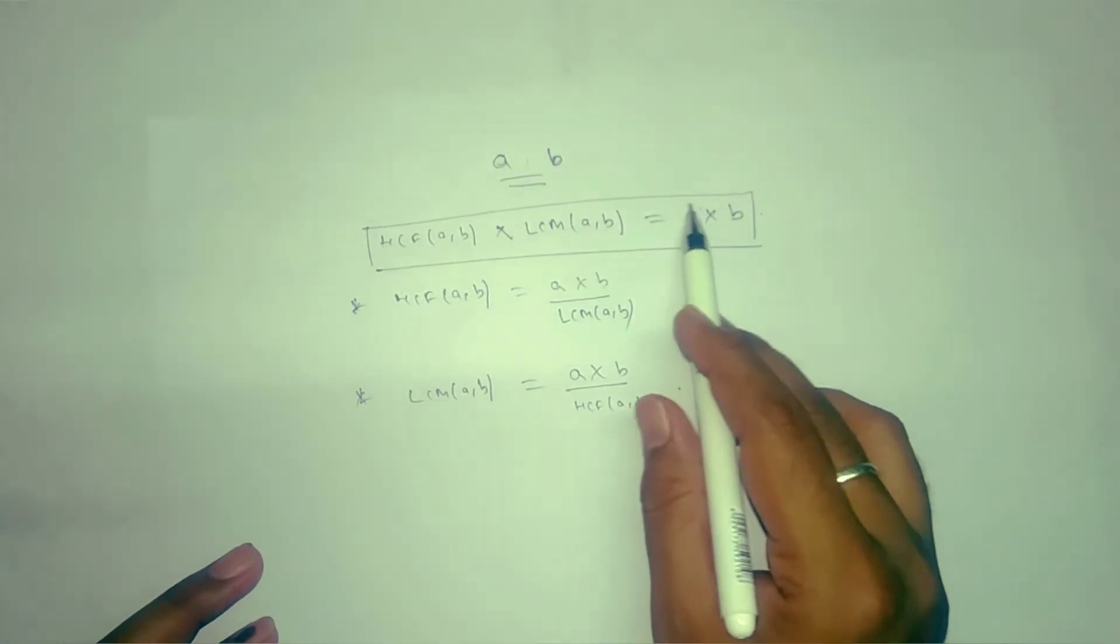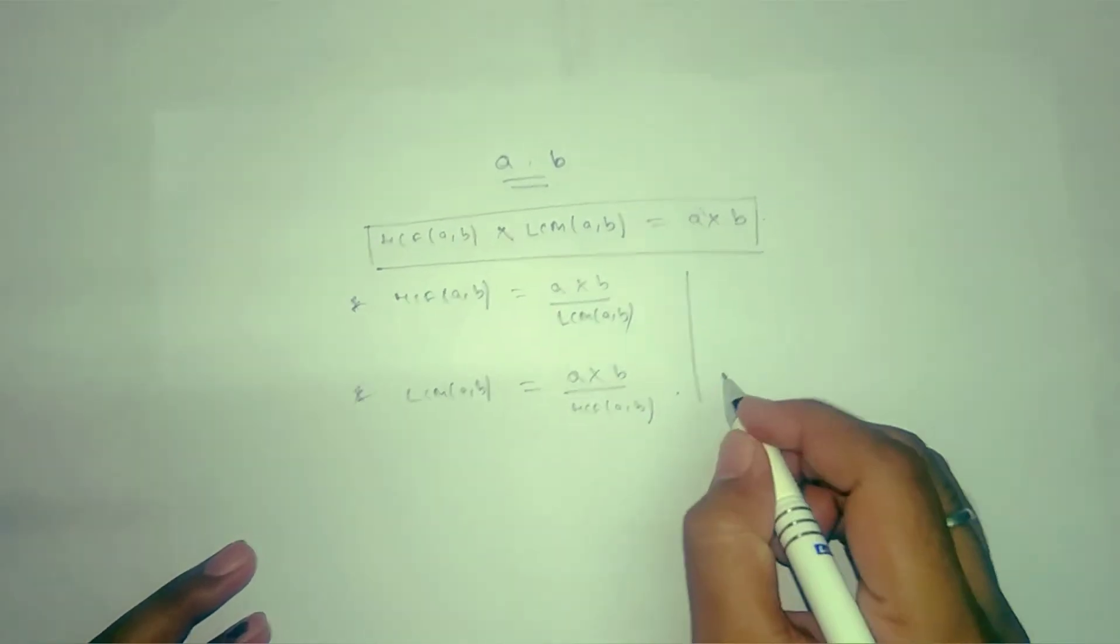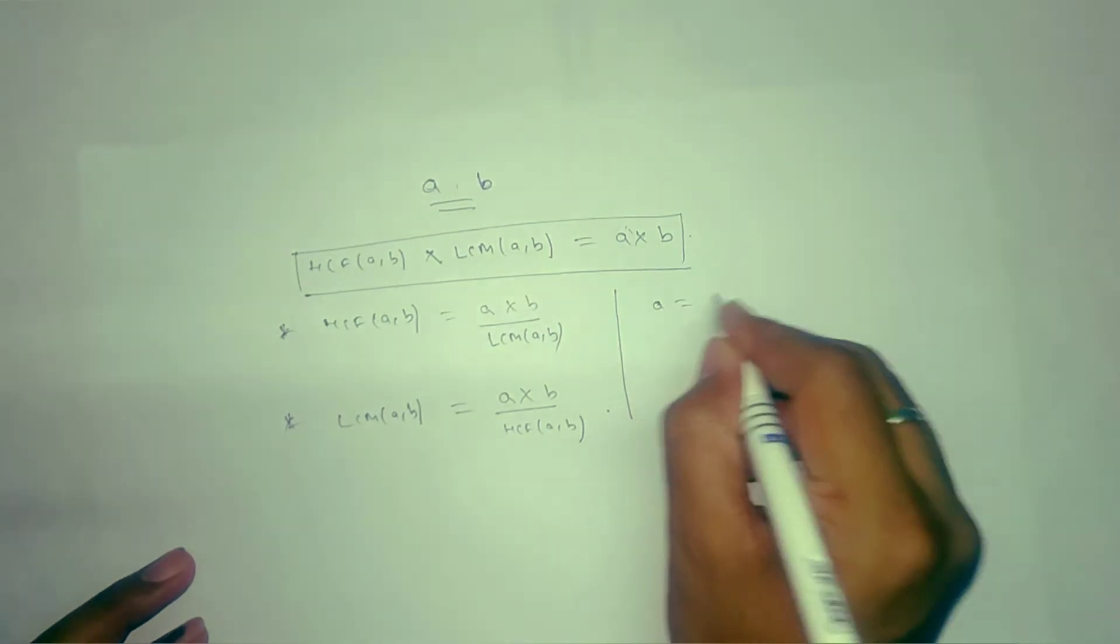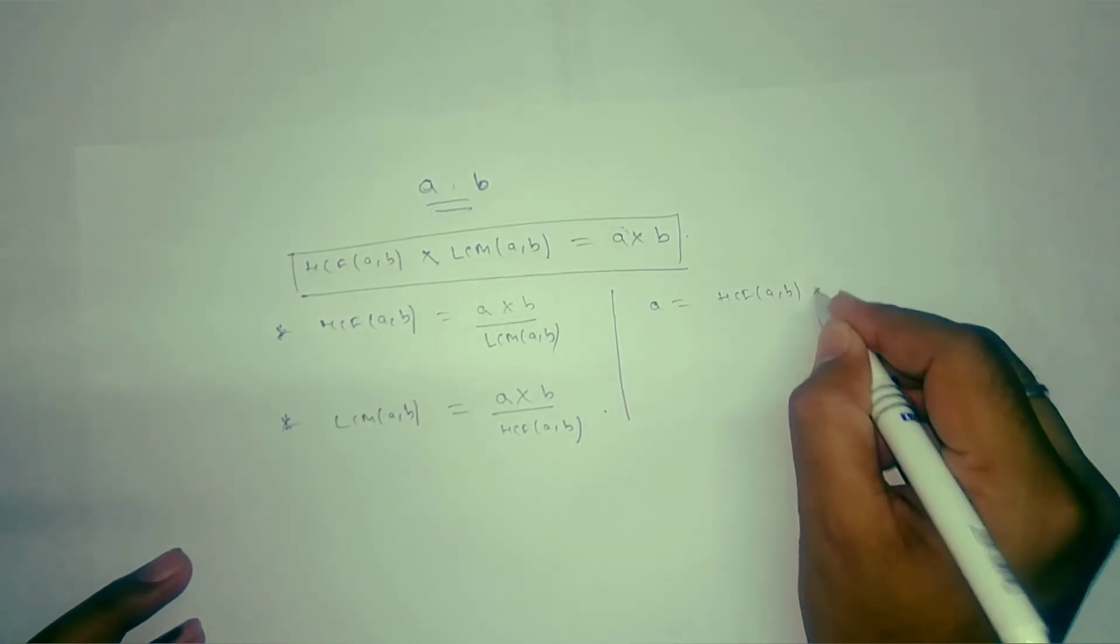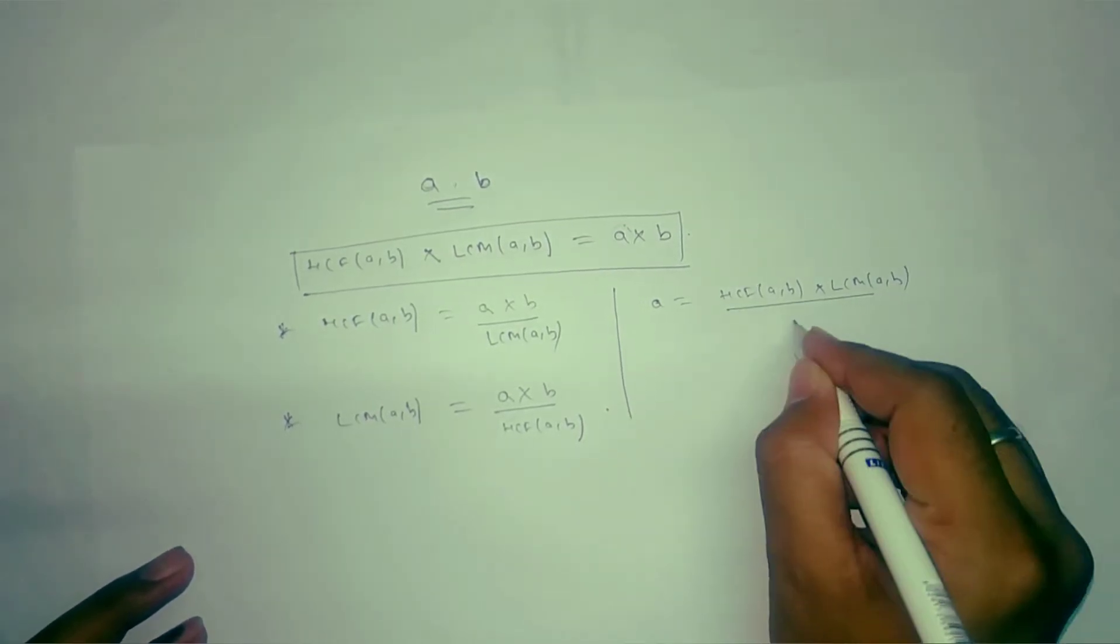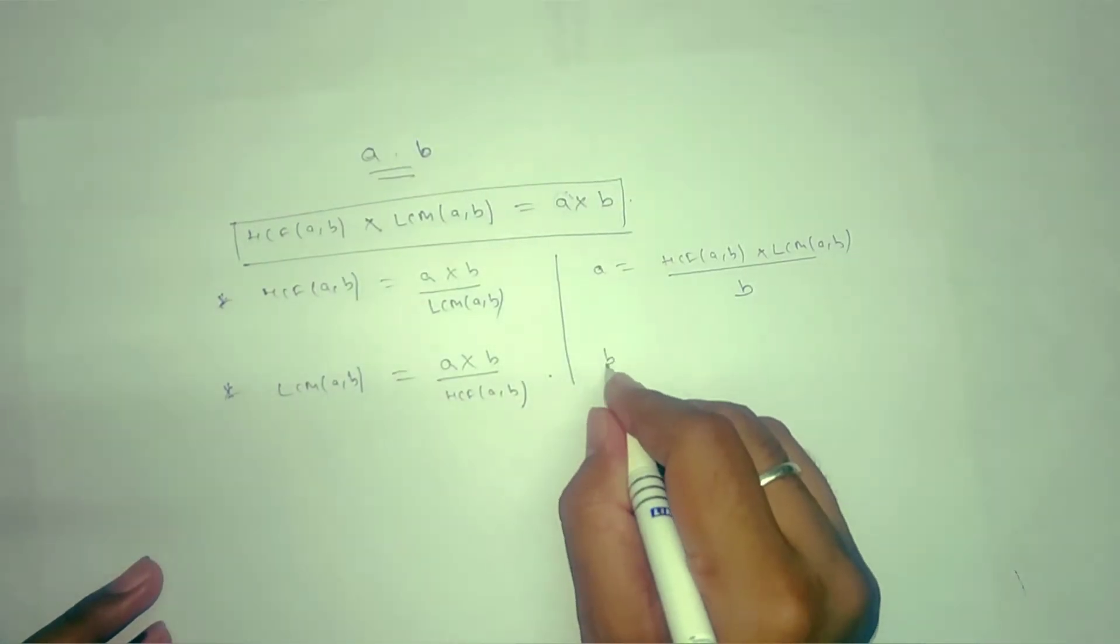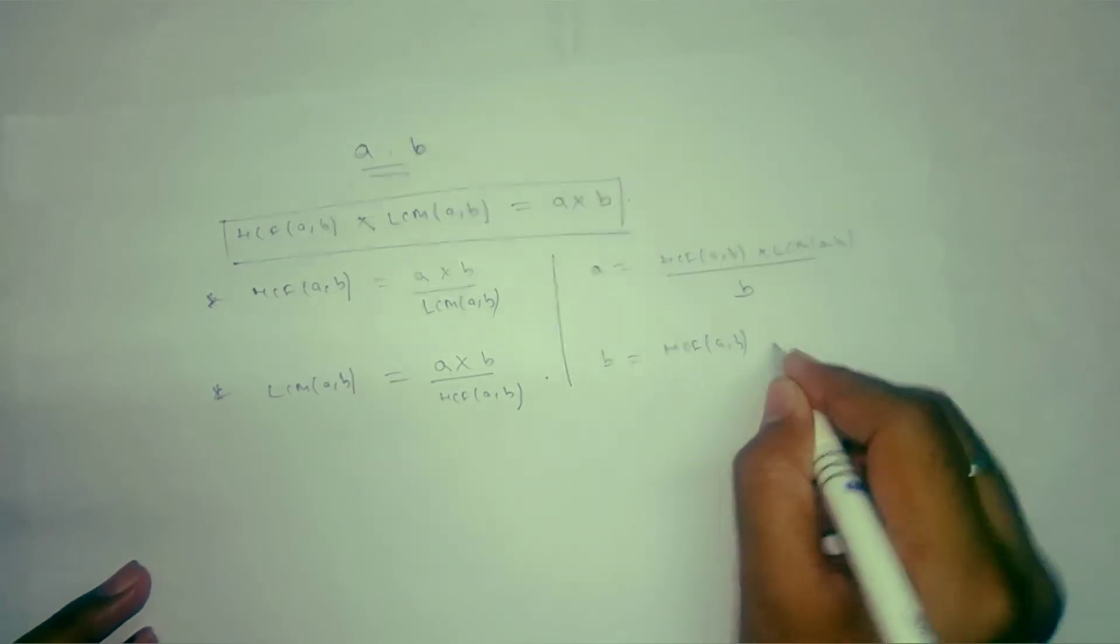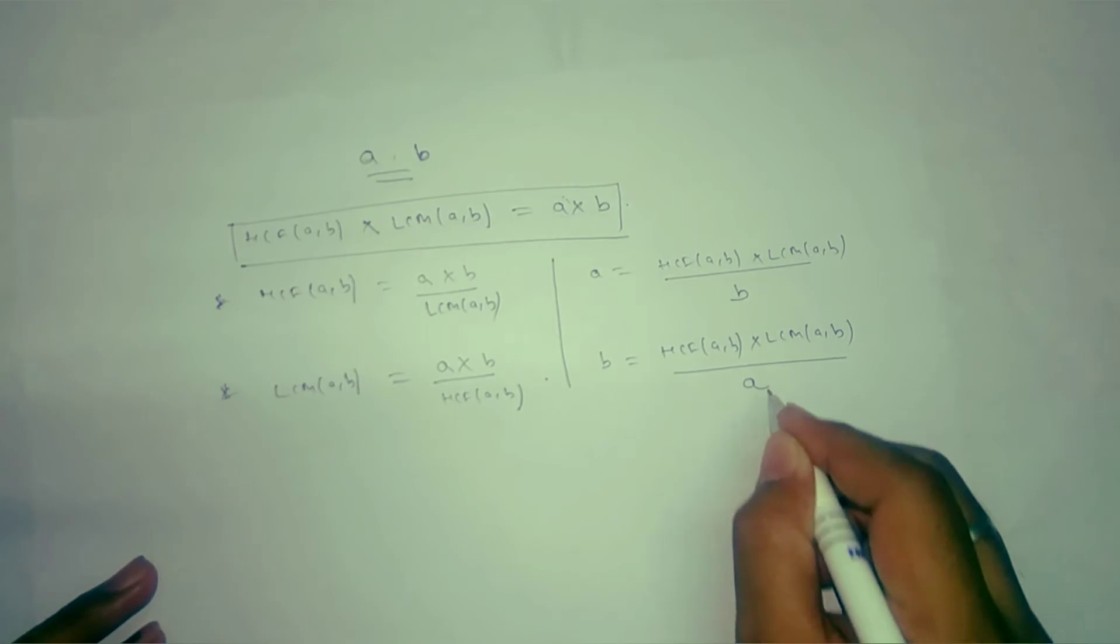To find any one of the numbers, you can derive it from here only. If you need to find a, then you can write a equals HCF of a, b times LCM of a, b divided by b. And to find b, you can write HCF of a, b times LCM of a, b divided by a.